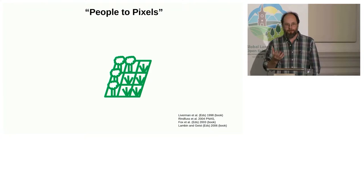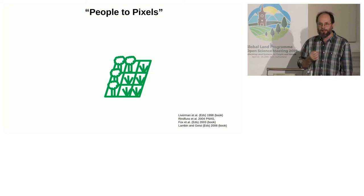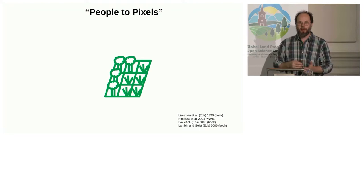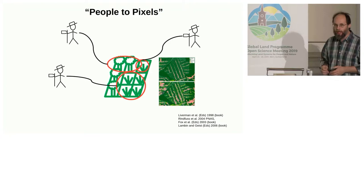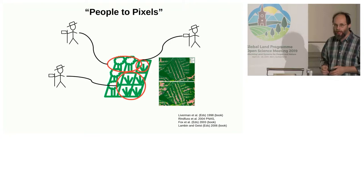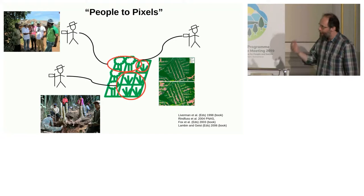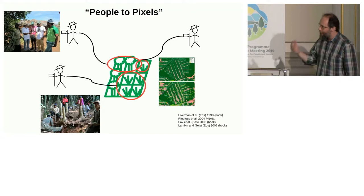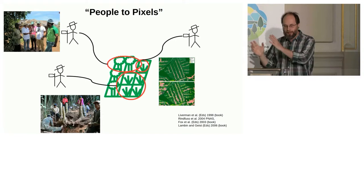A key, really fundamental approach in land system science has been what is called the people-to-pixels approach, which is really one way to make this connection between human and environmental systems. The idea is to start with some kind of geospatial data, typically produced by remote sensing but not only, and then linking that to data about human activities and land use — obtained from secondary sources but also from primary field surveys, both qualitative and quantitative — and linking that to data about environmental dynamics and properties such as carbon biomass and different land use land cover.